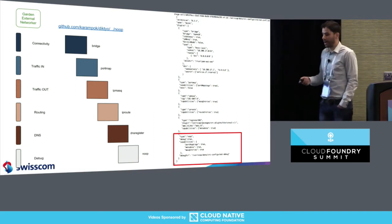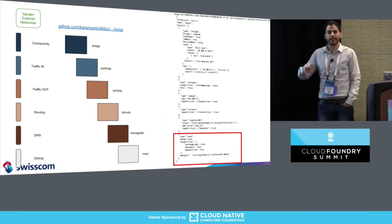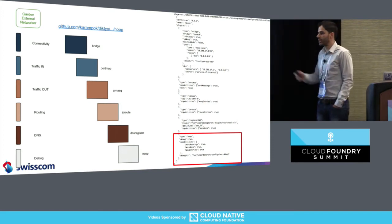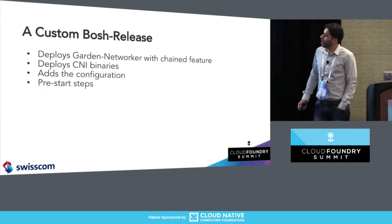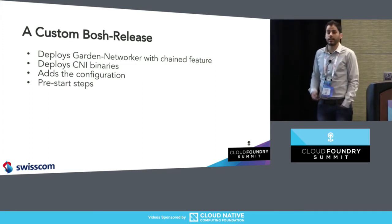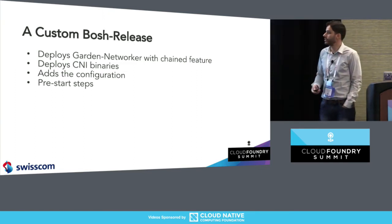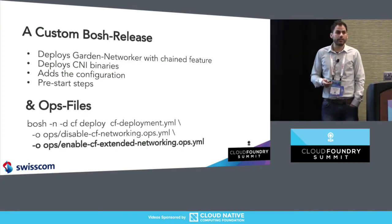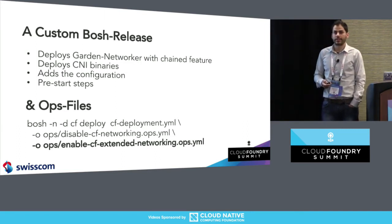Because it was a bit hard to debug, I wrote one other plugin that basically writes all the configuration to disk, making it easy to debug this black box. Such a plugin might also be interesting for auditing reasons. I created a custom BOSH release which deploys the Garden External Networker, all my binaries, my configuration files, and does some pre-steps. Then I just add another ops file which basically enables my CF extended networking.